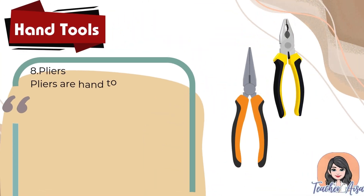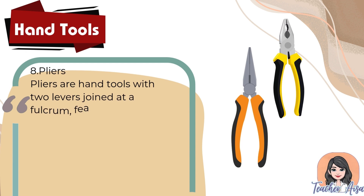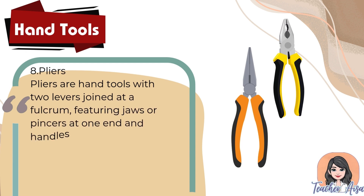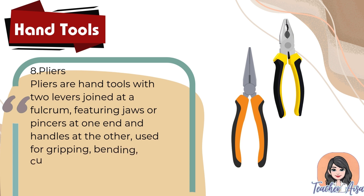Eight: pliers. Pliers are hand tools with two levers joined at a fulcrum, featuring jaws or pincers at one end and handles at the other, used for gripping, bending, cutting, and holding objects.